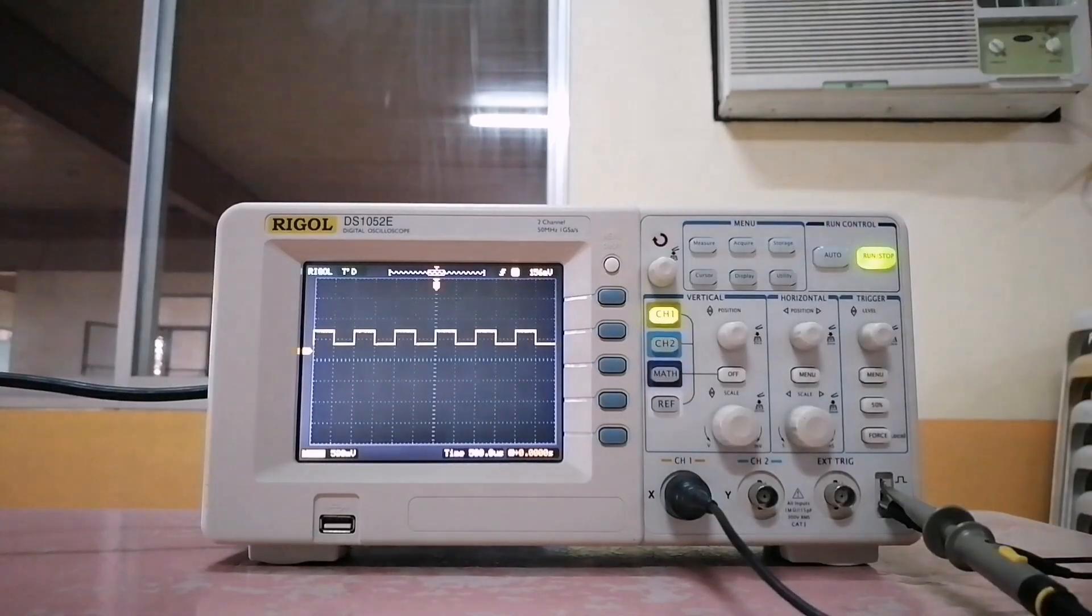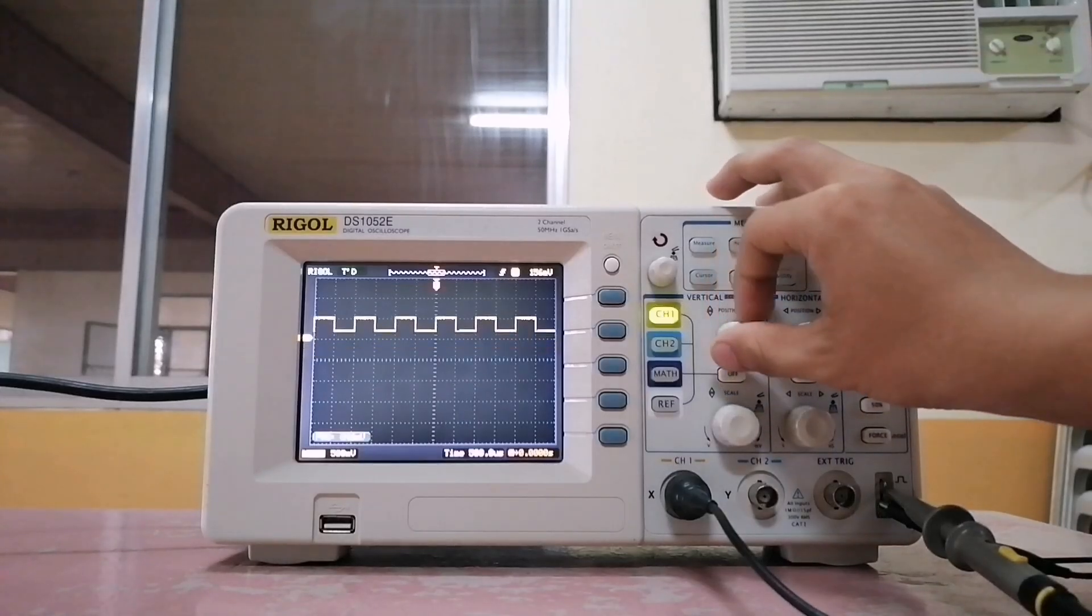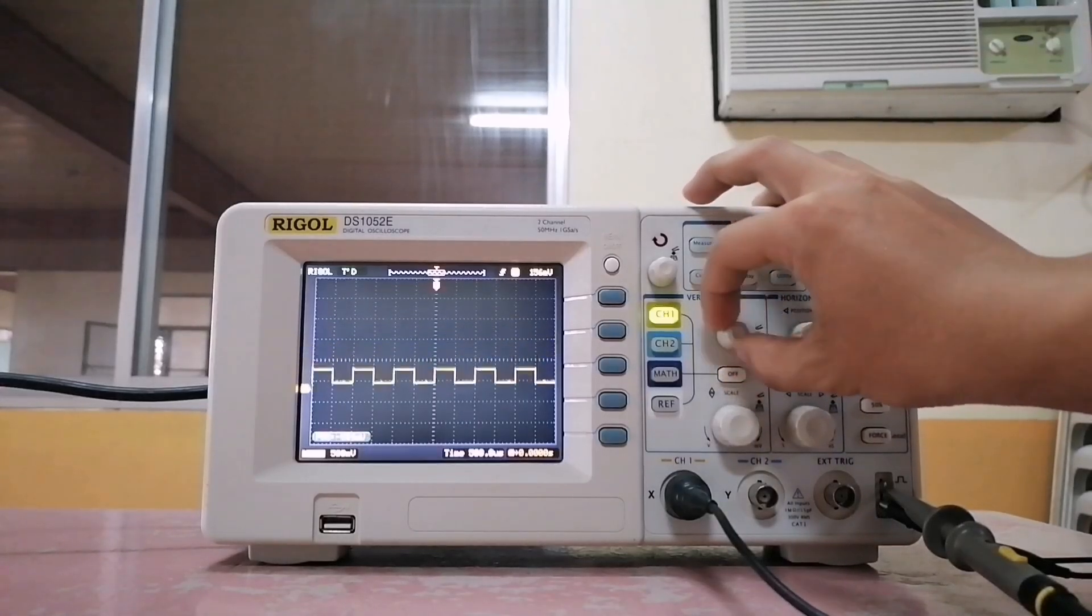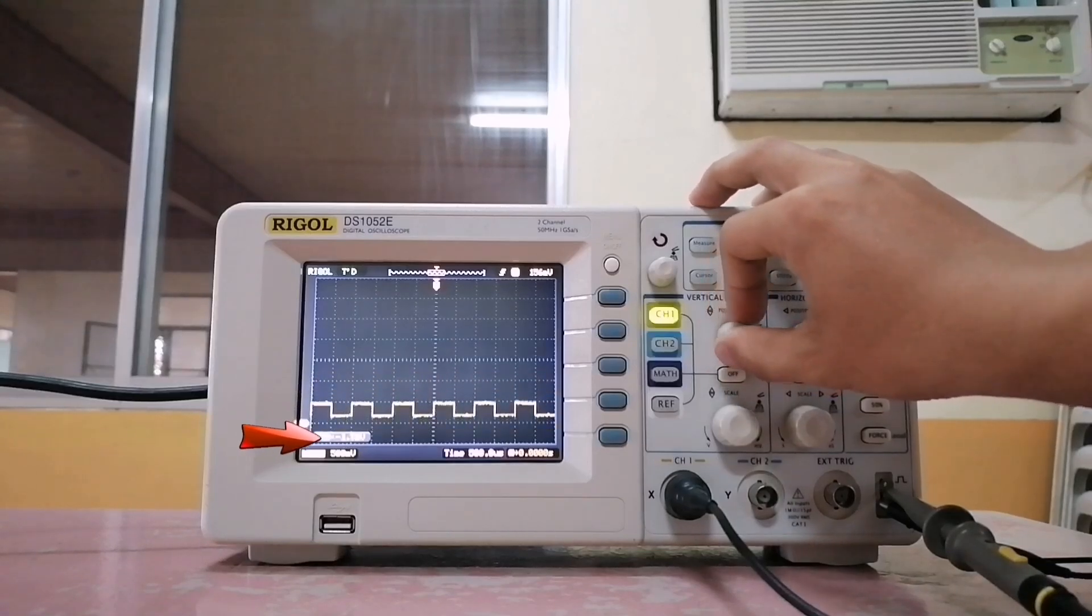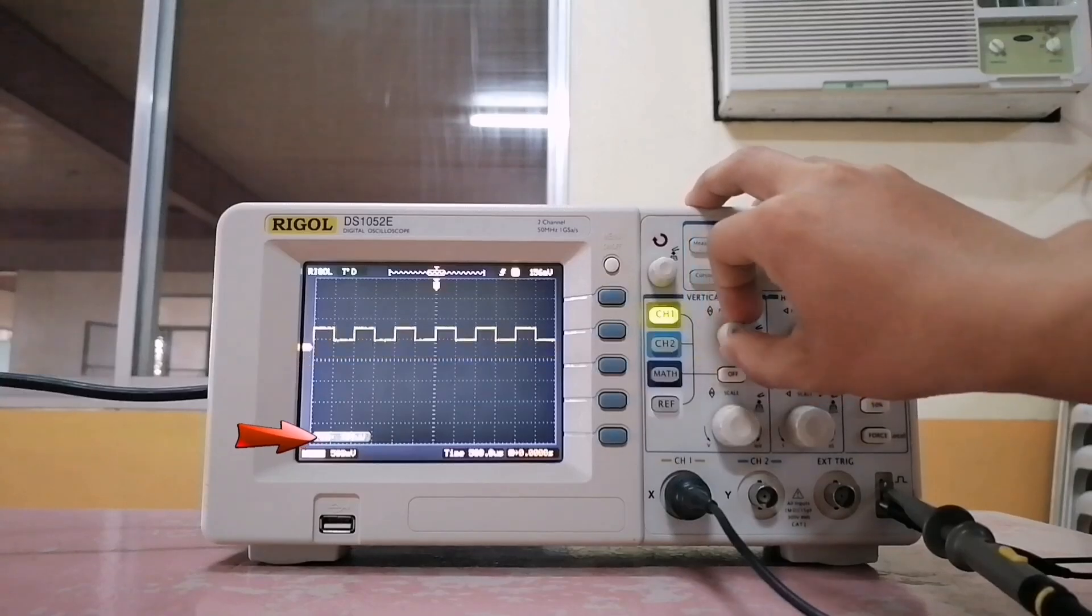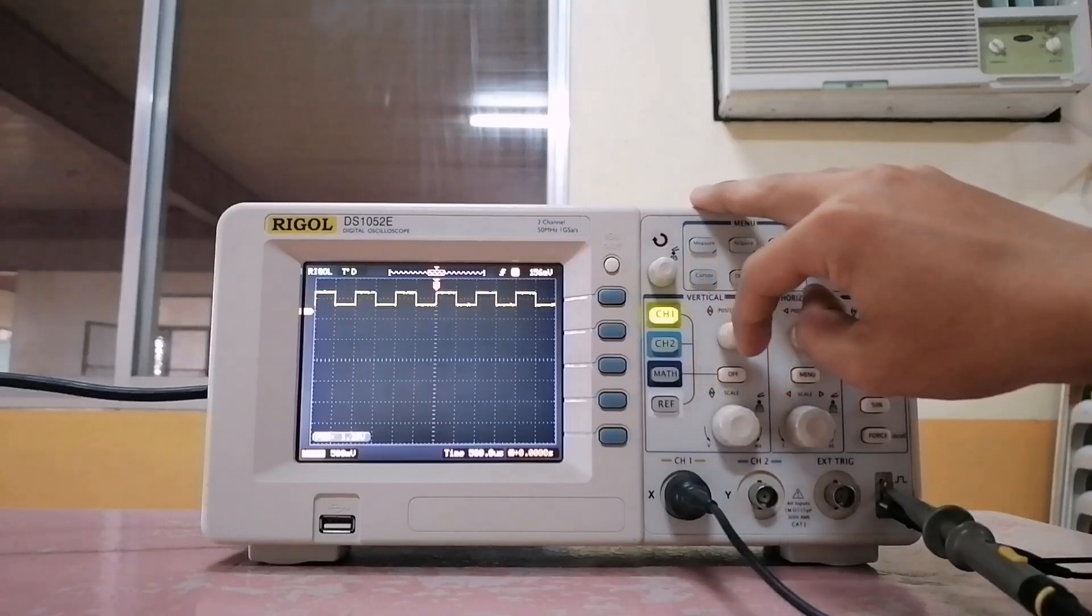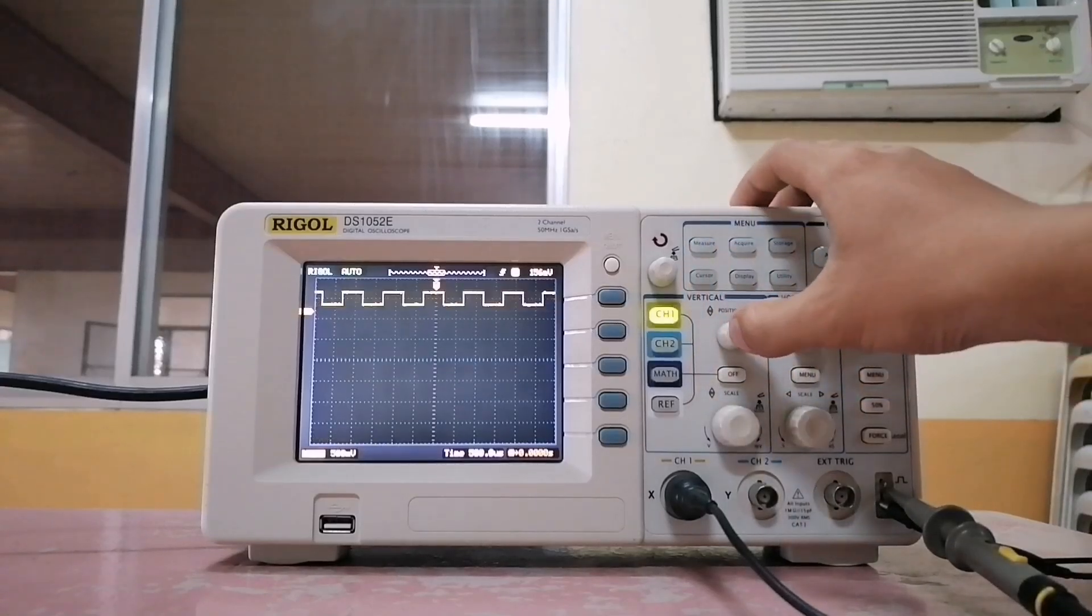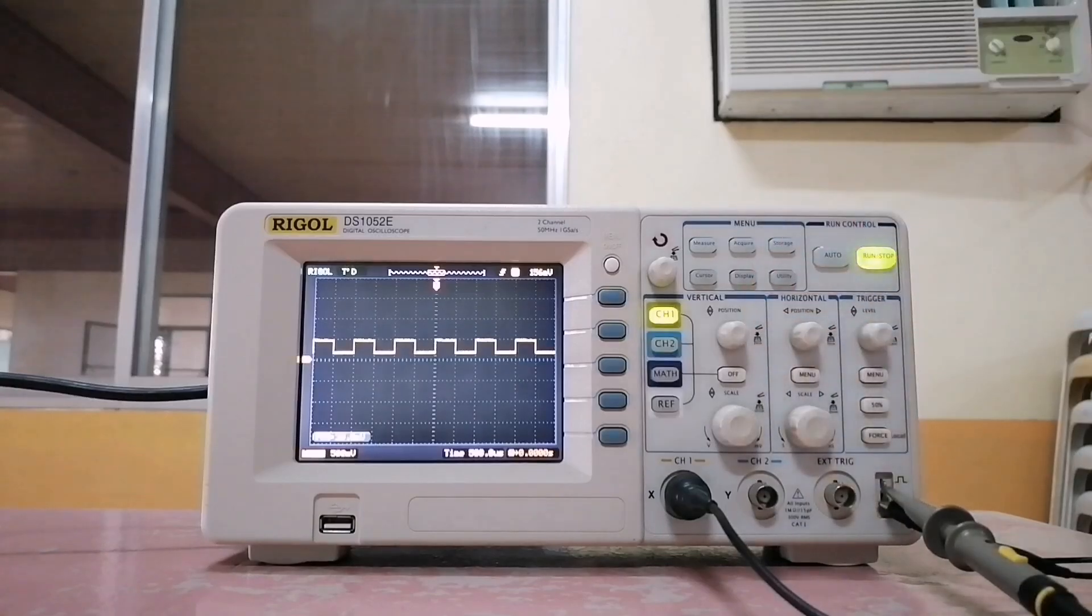For the vertical position of the signal, turn this knob. The position indicator will tell you how far your signal has moved with respect to the ground reference. If you want to bring your signal back to the center, just click the position knob.